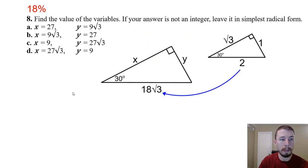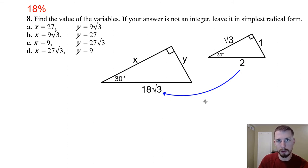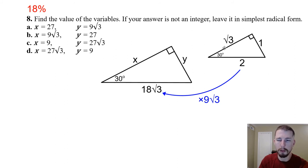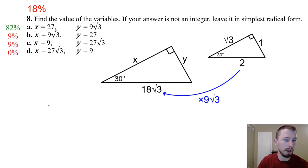Number eight — also a 30-60-90, but flipped upside down — don't let that confuse you. The hypotenuse (longest side) is on the bottom: 18√3. Going from the unit hypotenuse of 2 to 18√3, the scale factor is 9√3. So y (short side) = 1 × 9√3 = 9√3, and x (medium side) = √3 × 9√3 = 9 × 3 = 27. Answer: A. Some of you had those reversed — be careful.